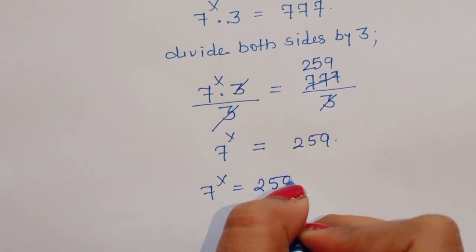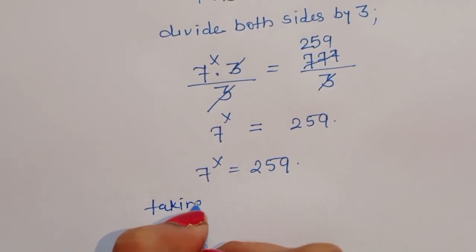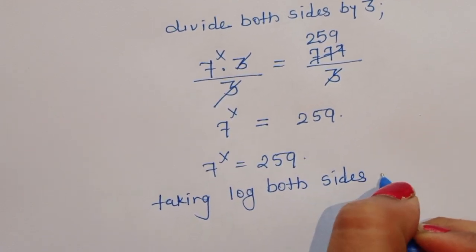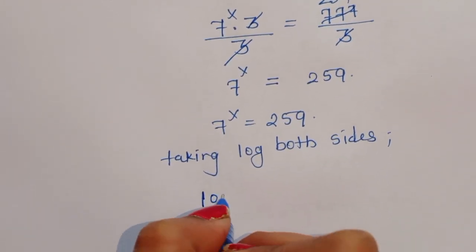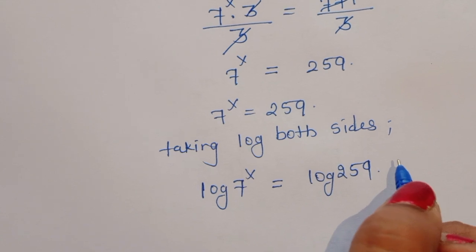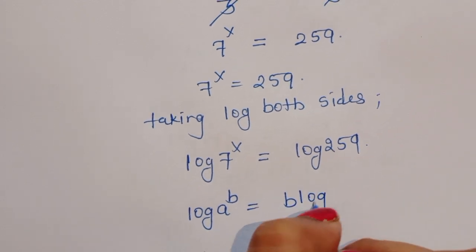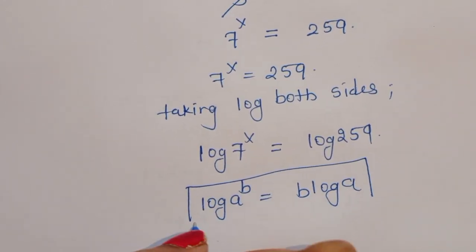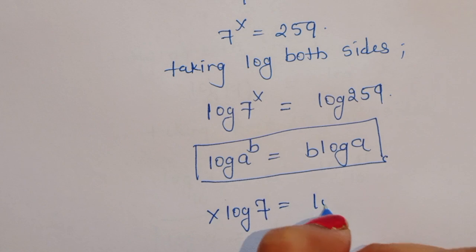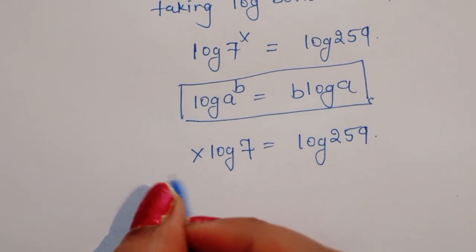7 power x is equal to 259. Now we take log of both sides. Log of 7 power x is equal to log of 259. We know the formula: log of a power b is equal to b times log of a.